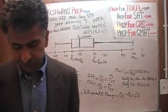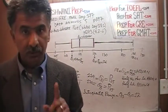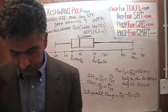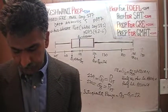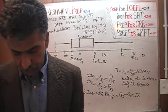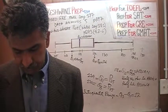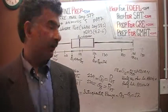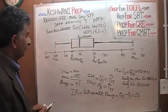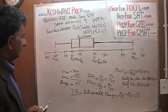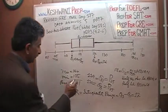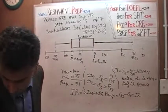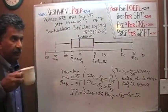Part B says: if the 80th percentile of the measurements is 130 milligrams, how many measurements are between 126 milligrams and 130 milligrams? This looks like a complicated question. Let me erase the board so it's not too crowded.